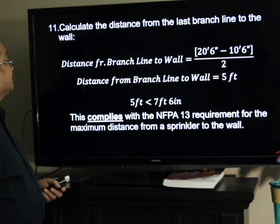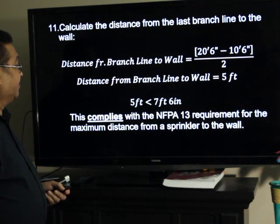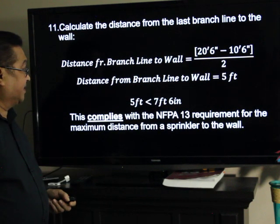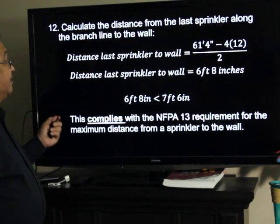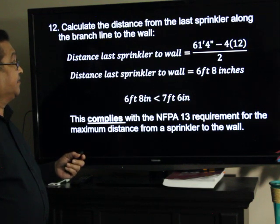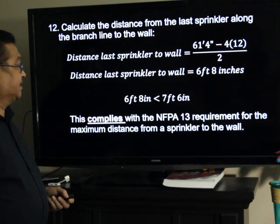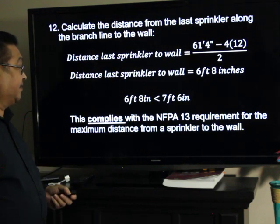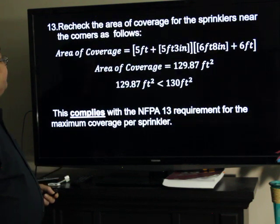Calculate the distance from the last branch line to the wall: 20.5 minus 10.5 feet, all over 2, will be 5 feet. It's less than 7 feet and 6 inches, so that is okay — it complies with the NFPA requirement. And calculate the distance from the last sprinkler along the branch line to the wall: 61 feet 4 inches, minus 4 times 12, all over 2. We have 6 feet and 8 inches, which is less than 7 feet and 6 inches, which also complies with the NFPA 13 requirement for the maximum distance from the sprinkler to the wall.